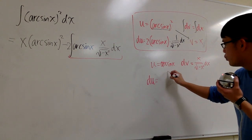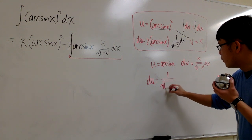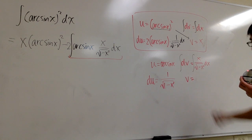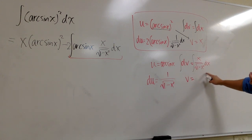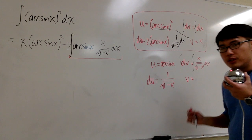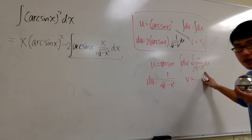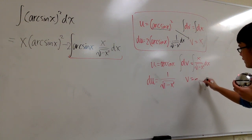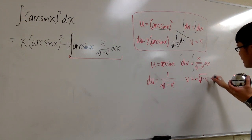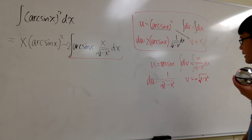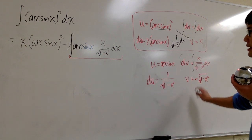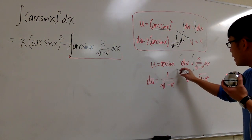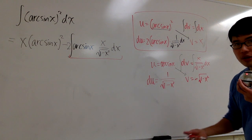So dv equals x over square root of 1 minus x squared dx, and we differentiate arc sine x to get du. du equals 1 over square root of 1 minus x squared dx. Then integrating both sides: v equals the integral of x over square root of 1 minus x squared. Using u-substitution with u equal to 1 minus x squared, the result is v equals negative square root of 1 minus x squared. These are the ingredients for the second integration by parts step: the product of the diagonal will be part of the answer.